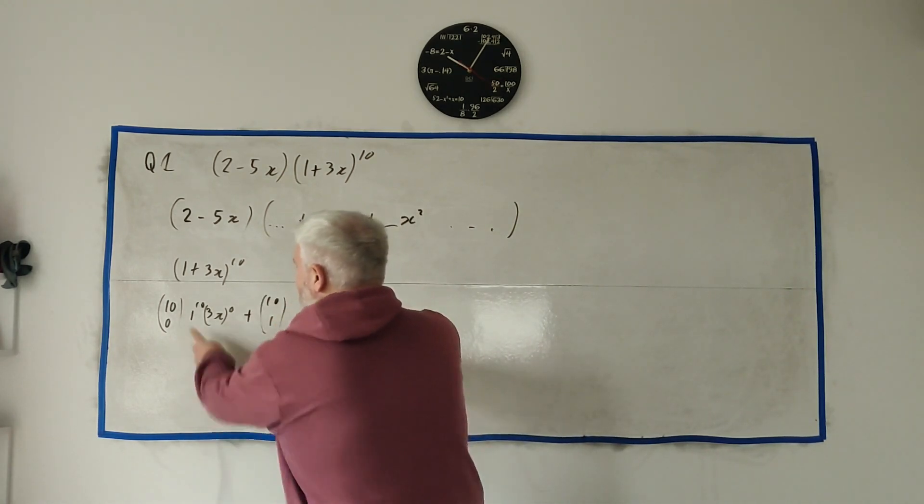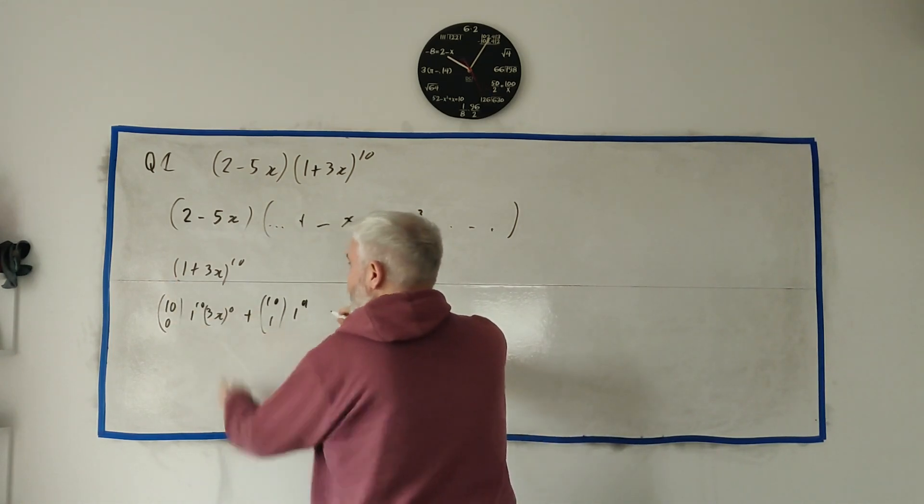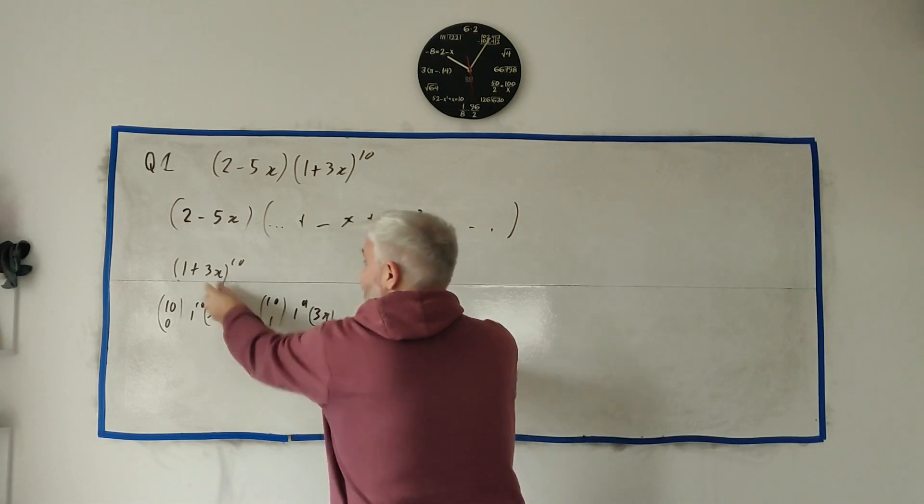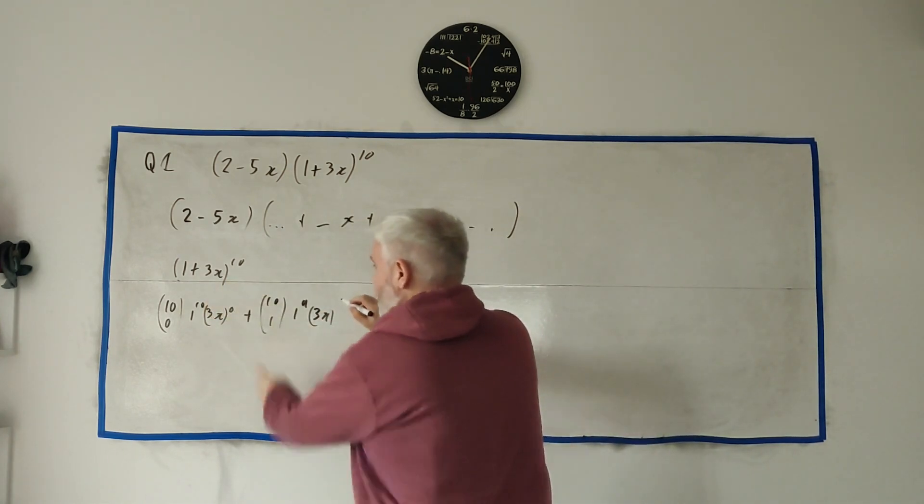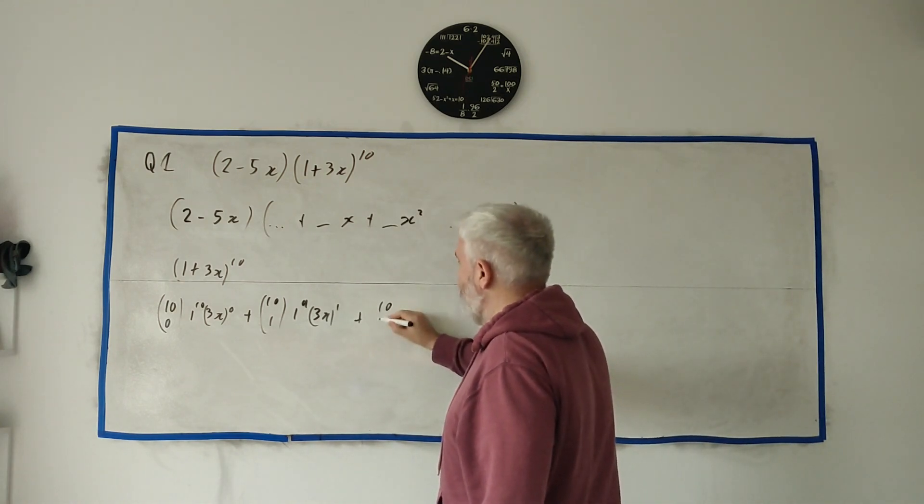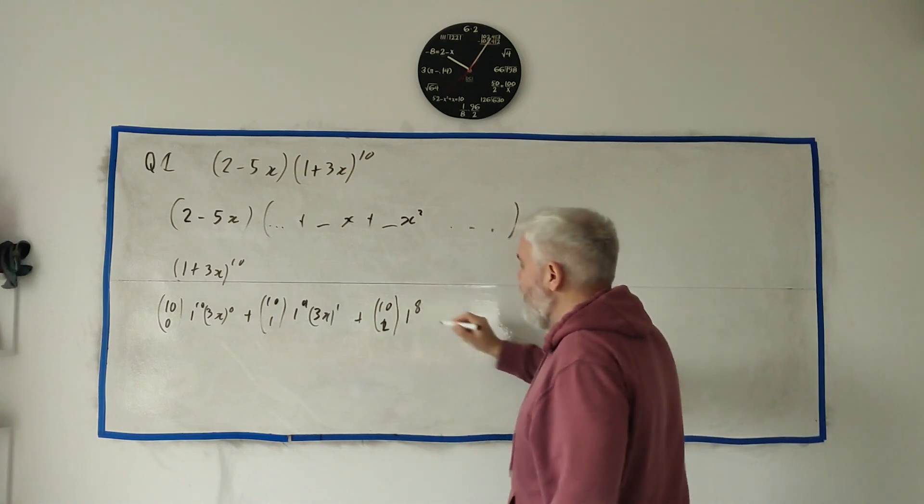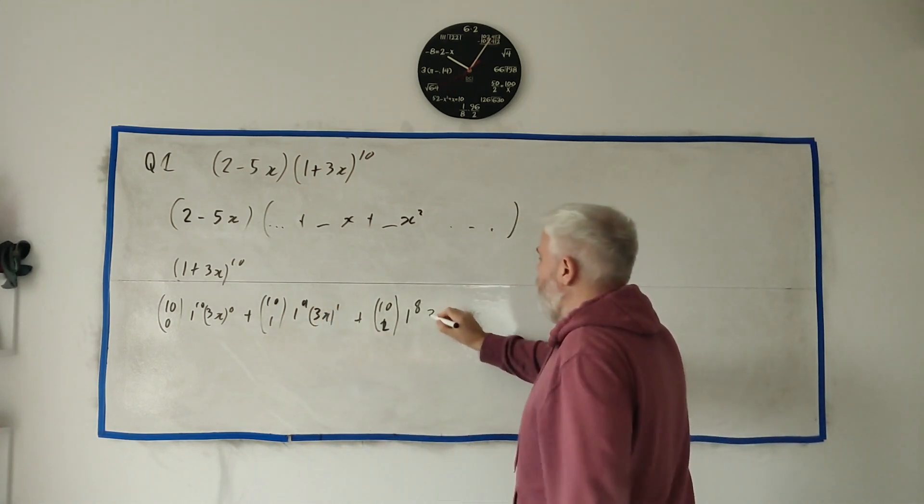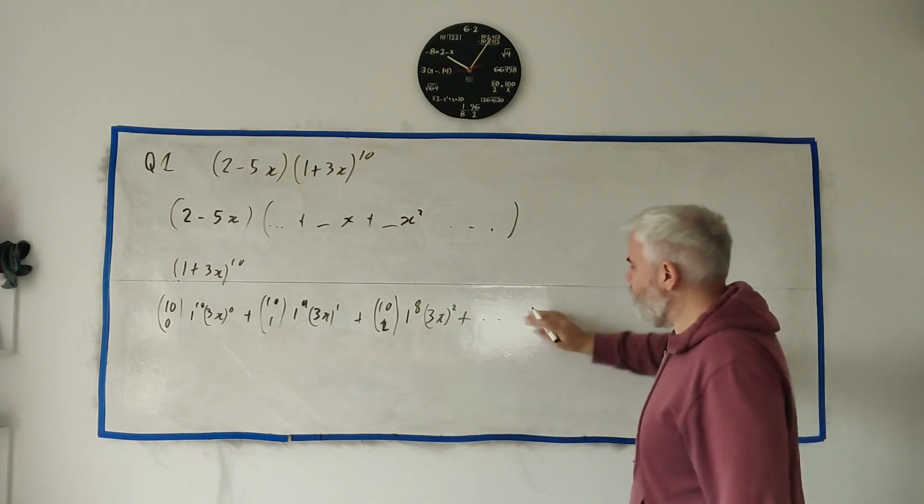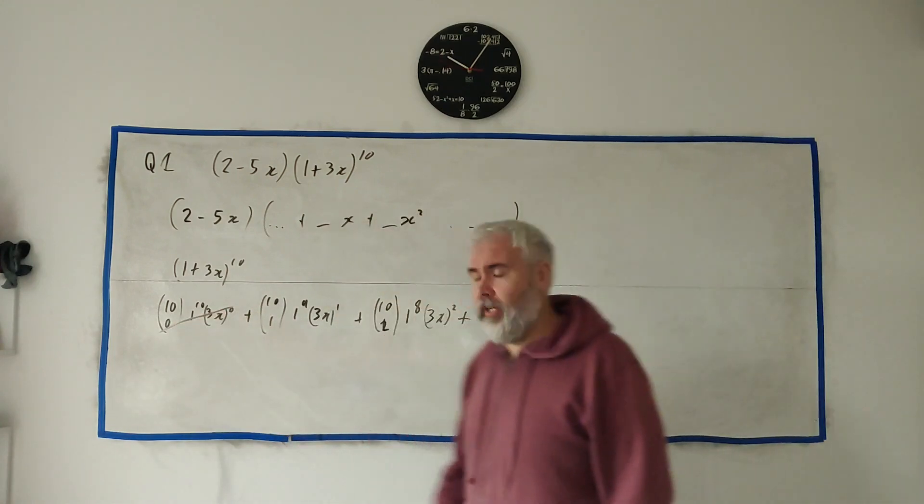And then 1 to the power of 9, so 1 less than that one, 3 to the power of... 3 times x, which is the second term, to the power of 1. And the next one would be 10 choose 2, and 1 to the power of 8, so 1 less again, 3x to the power of 2. And this is going on. I'm just not interested in it anymore.